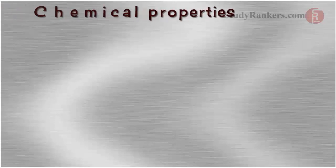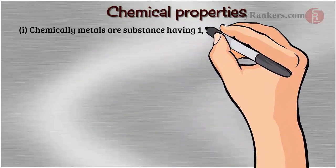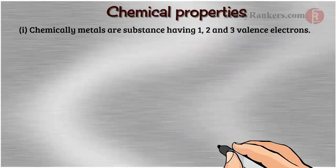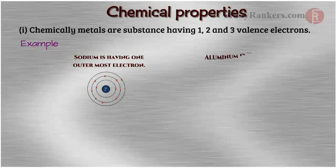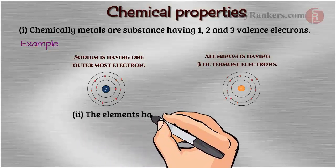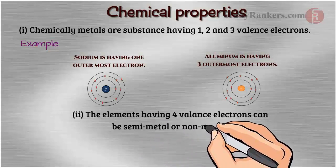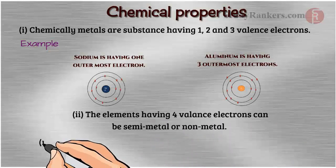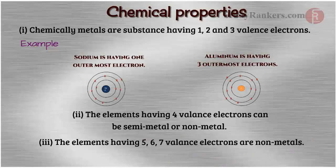You see there are so many exceptions. We really can't define them on the basis of physical properties. We should go for chemical properties. Chemically, metals are substances having one, two, and three valence electrons. For example, sodium is having one outermost electron. Aluminum is having three outermost electrons. The elements having four valence electrons can be semi-metal or non-metal. The elements having five, six, seven valence electrons are non-metals.